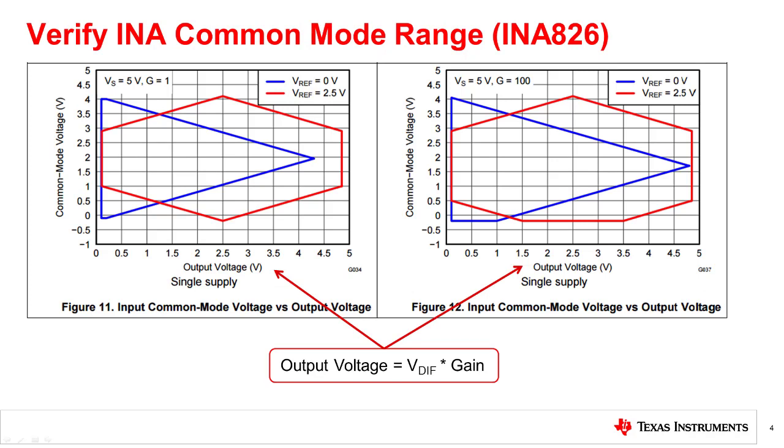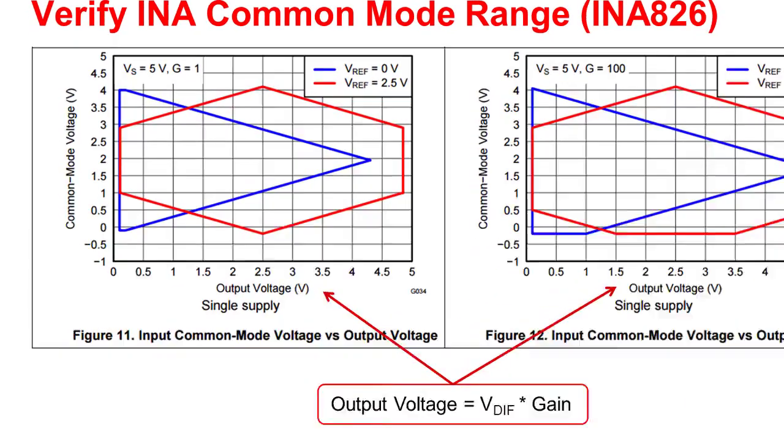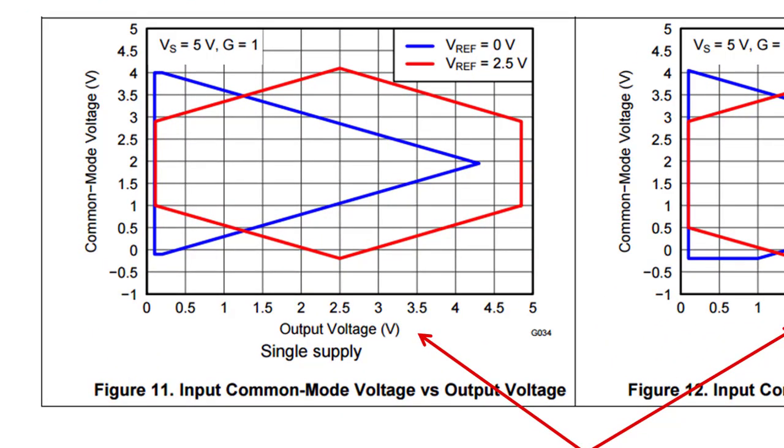Here are examples from the INA 826 data sheet that graph the common mode versus output swing limitations. A key point in these type of plots is to understand that the output voltage is equal to the Vdiff multiplied by the gain. One limitation of these plots is that they are only valid under specific test conditions. For example, the plot on the left shows the common mode range versus output voltage for a 5 volt supply, a gain equal to 1, and two specific reference levels.